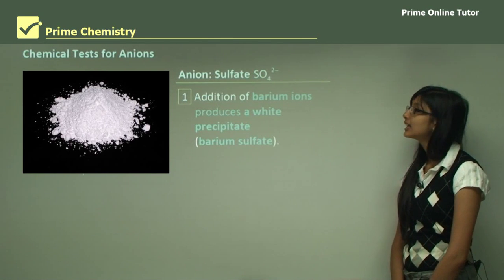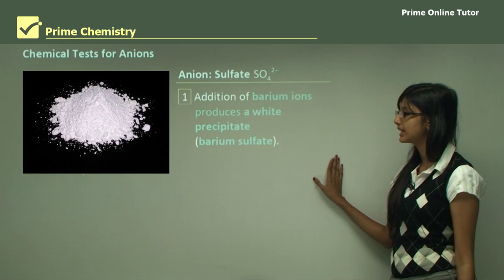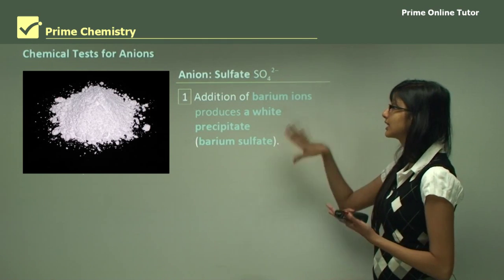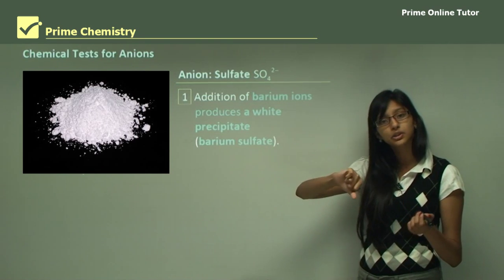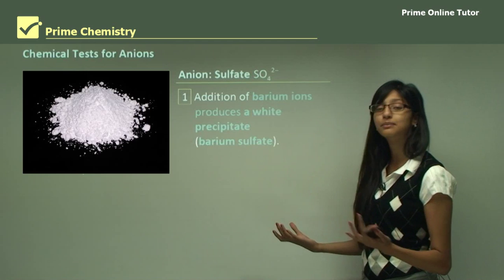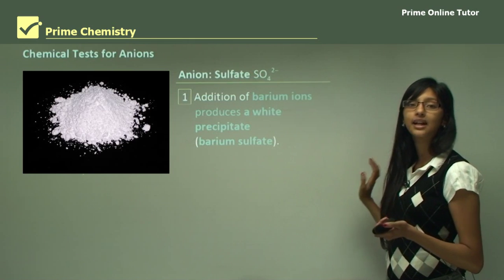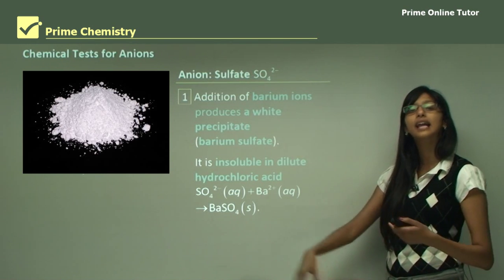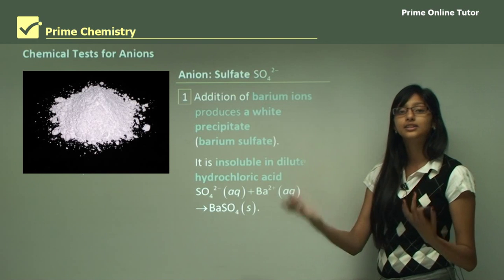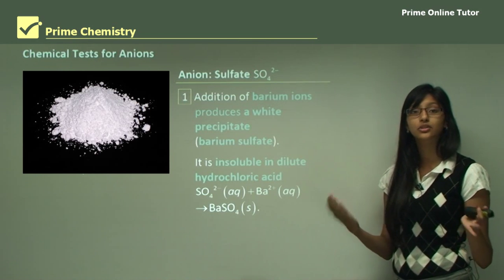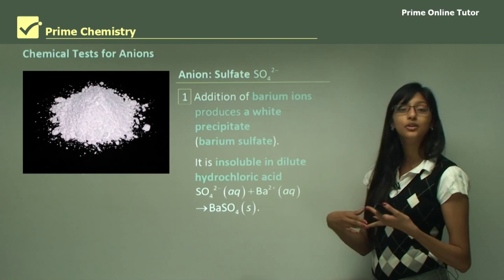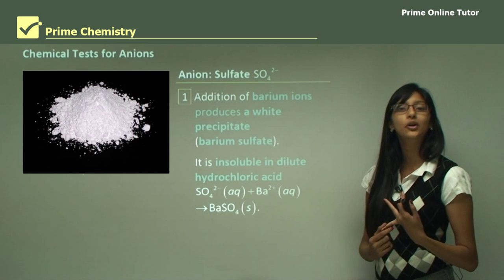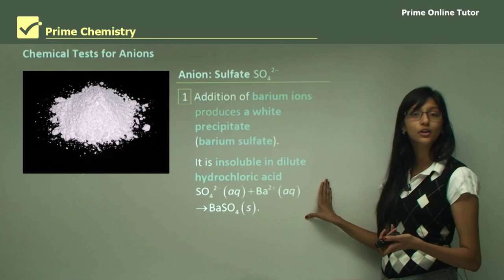Now let's look at sulfate. Addition of barium ions produces a white precipitate of barium sulfate. If your unknown sample contains sulfate anions and you add barium, a white precipitate should form. Barium sulfate is insoluble in hydrochloric acid, so even if you add lots of acid the precipitate will not dissolve — this confirms that the ion present is sulfate, since barium sulfate does not dissolve in an acidified solution.